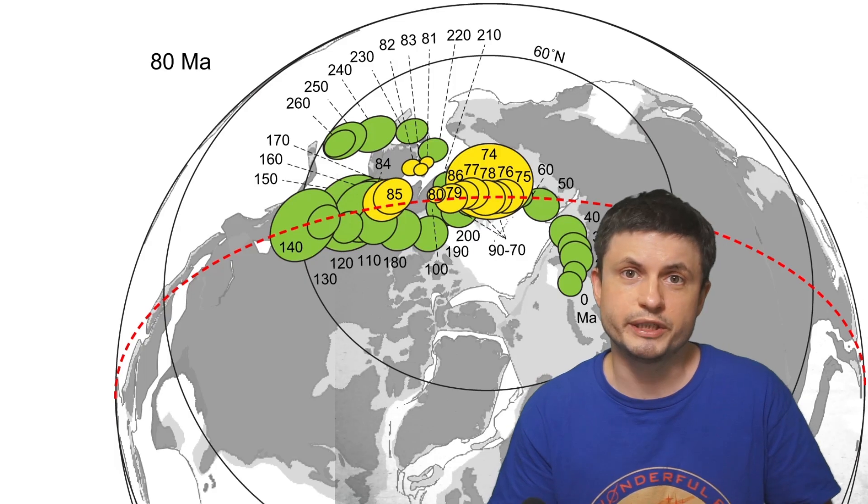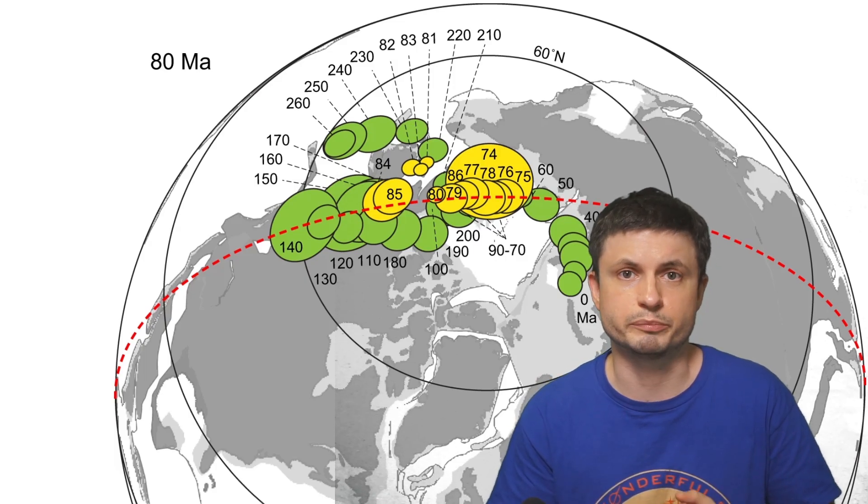More specifically, I wanted to discuss this new discovery coming from one of the recent papers that suggests that the rotation of the planet, the axis of rotation of the planet, shifted by about 12 degrees before returning back to its original position.